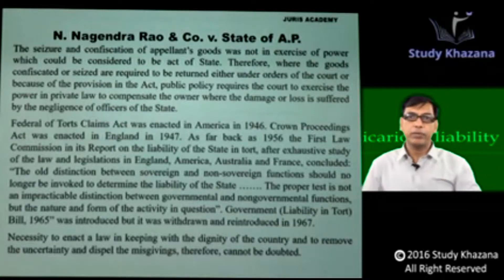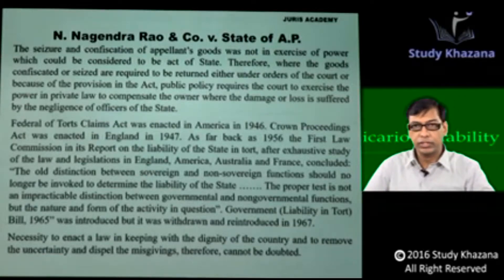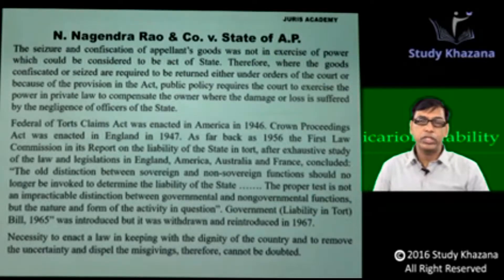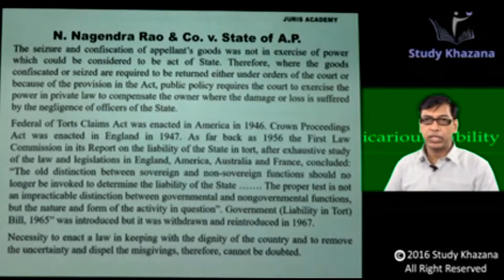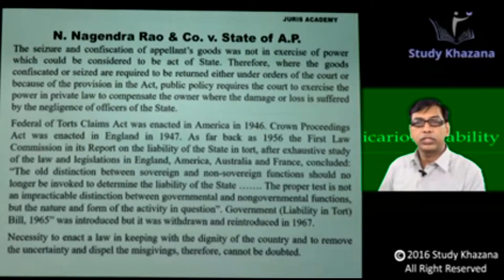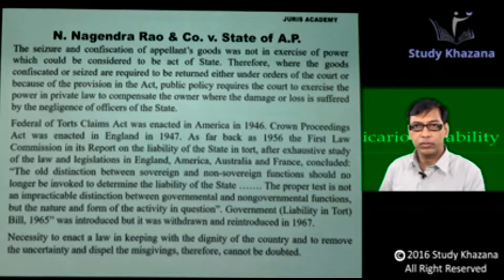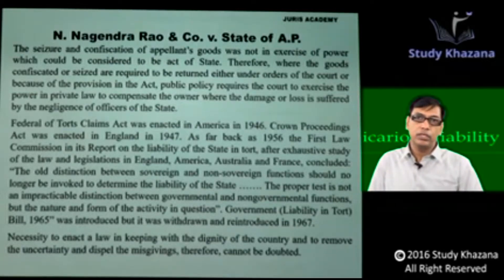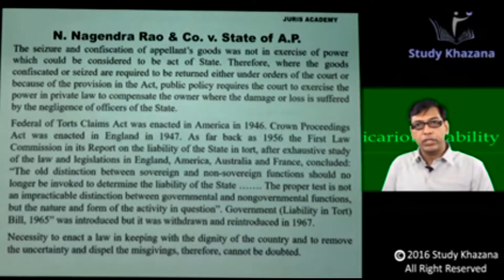Till the time Parliament or any state legislature passes any law on this subject, we have to look to these authorities and we can look into the various constitutional provisions. We need to understand the doctrine of rule of law side by side with the various authorities available to us, such as State of Rajasthan versus Vidyawati and N. Nagendra Rao and Company versus State of Andhra Pradesh. These are the authorities which are the source of law regarding vicarious liability of the state.